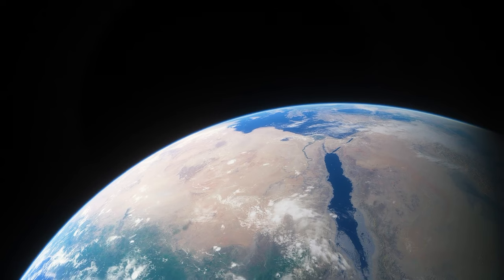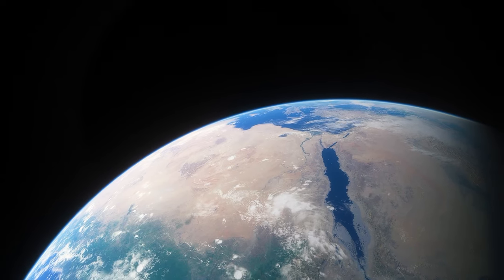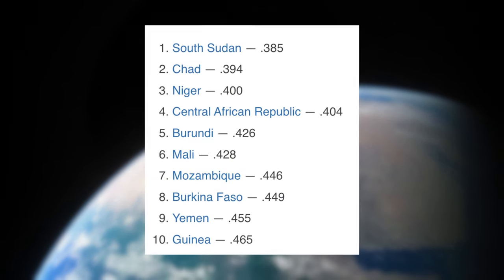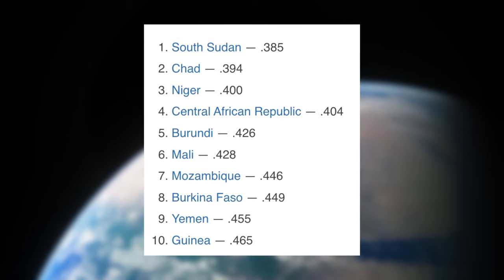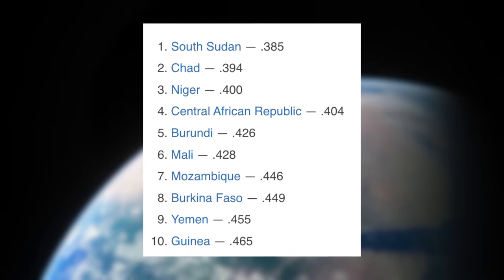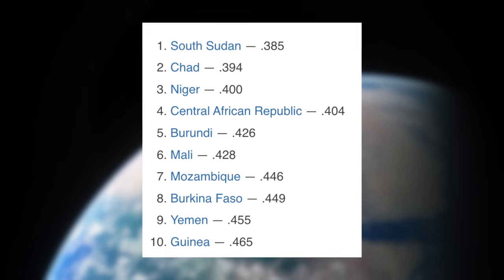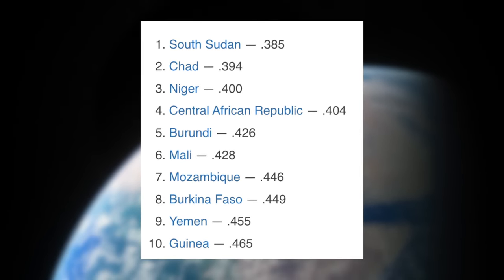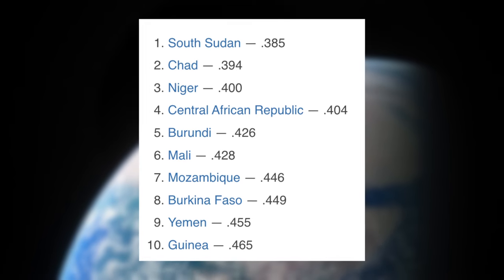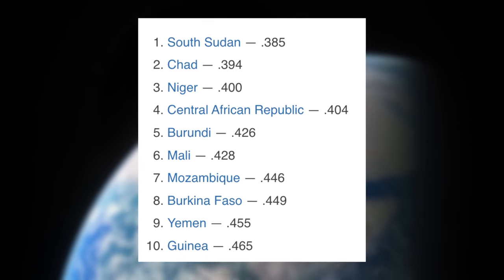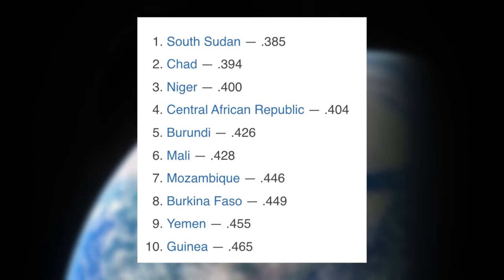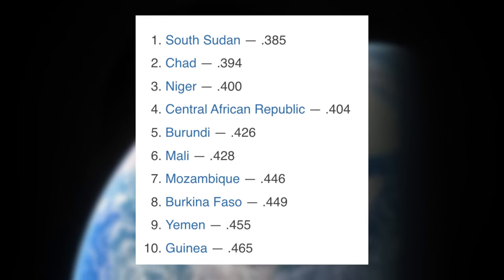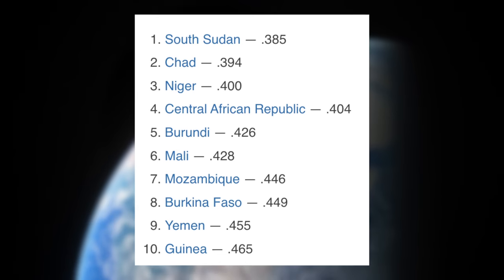For reference, the 10 least developed countries on Earth are South Sudan, Chad, Niger, Central African Republic, Burundi, Mali, Mozambique, Burkina Faso, Yemen and Guinea. That is 9 countries from Africa and 1 in Asia.